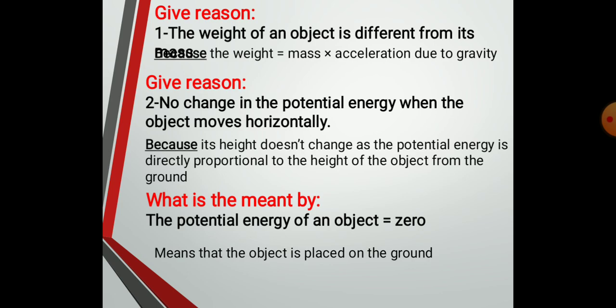Number two: no change in potential energy when the object moves horizontally, because its height doesn't change, as potential energy is directly proportional to the height of the object from the ground. What is meant by the potential energy of an object equals zero? This means that the object is placed on the ground.